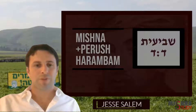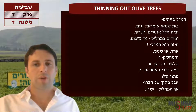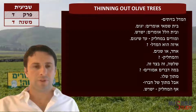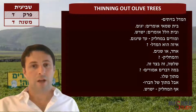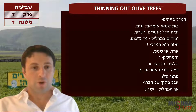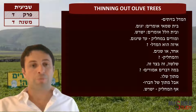Welcome to Mishnah Shviit, Perek Dalet, Mishnah Dalet. We're going to move on to speak about olive trees. A person who has olive trees in his field and wants to thin them out can either thin them by cutting away the branches almost to the point of a tree stump, or by actually uprooting the olive tree.